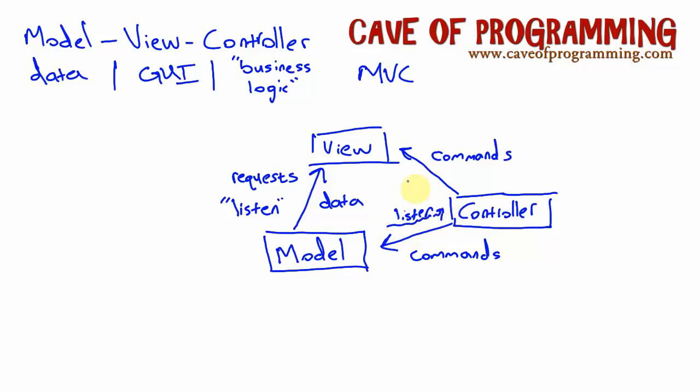So it may listen to the model, meaning that the model may notify the controller of stuff that's happening in it. And the controller will probably listen to the view, in fact I suppose it will have to listen to the view really, because otherwise how would it know what's going on? So the controller is listening to the view. The controller detects when things happen in the view and it does whatever it has to do. It does calculations and it then instructs the model what to do.